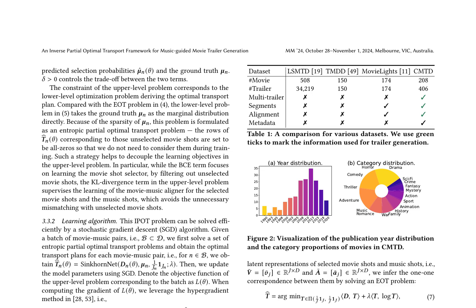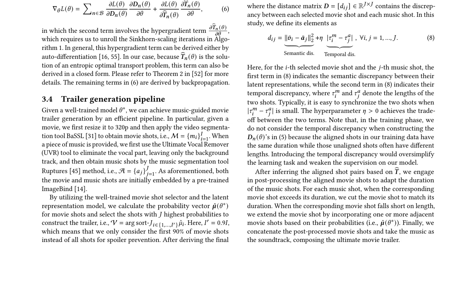The inverse partial optimal transport framework for music-guided movie trailer generation begins with the prediction of selection probabilities and the ground truth. This is constrained by the upper-level problem, which necessitates the formulation of a lower-level optimization problem. This lower-level problem is an entropic partial optimal transport issue, focusing on learning the movie shot selector and the movie music aligner. The learning algorithm employed is based on stochastic gradient descent, utilizing the hyper-gradient method for efficient computation. Once well-trained, the model selects movie shots and generates a trailer by resizing the movie, segmenting it into shots, and aligning these with music shots. An optimal transport problem is used to infer one-to-one correspondence between selected movie shots and music shots.